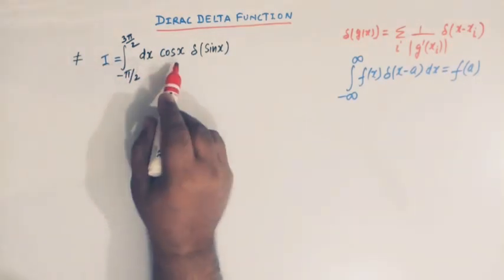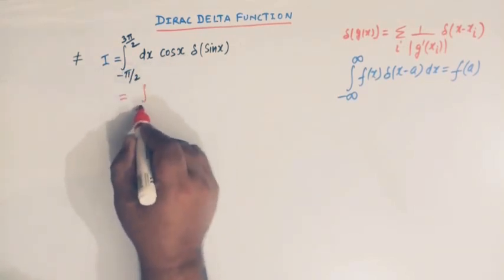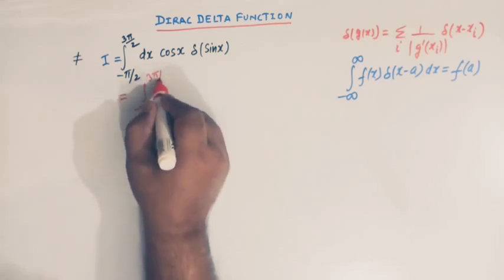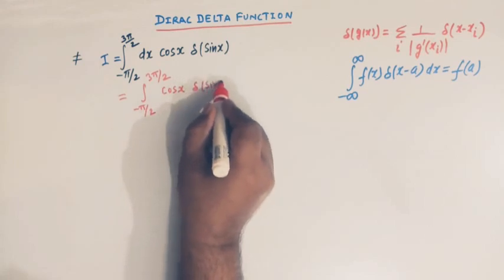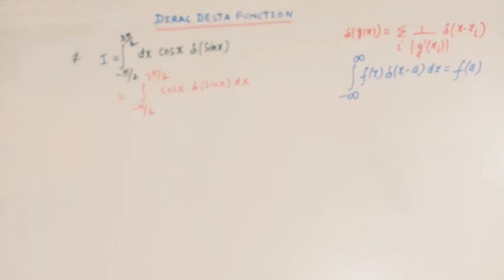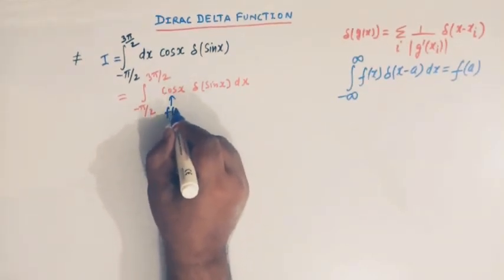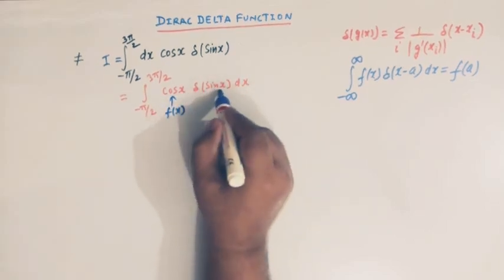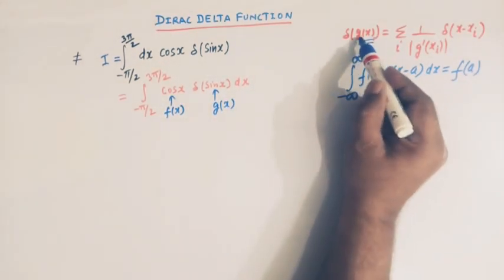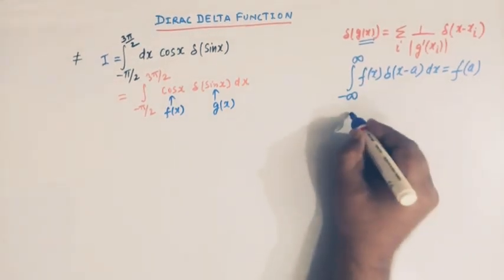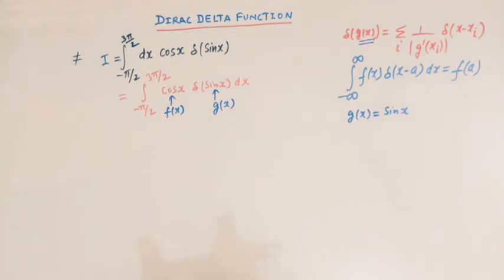Let us first write this integral as ∫₋π/₂^{3π/2} cos(x)·δ(sin x) dx. Here we can take f(x) = cos(x) and g(x) = sin(x).